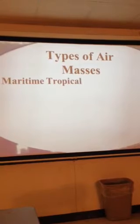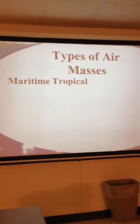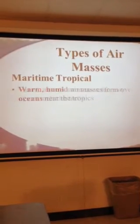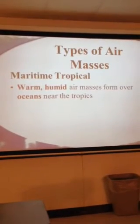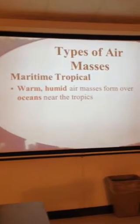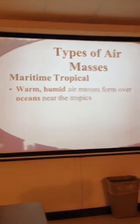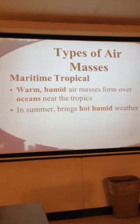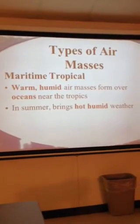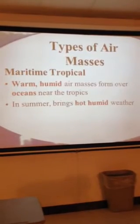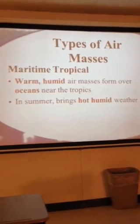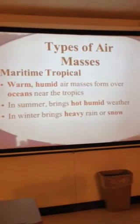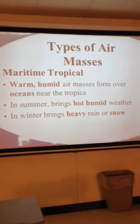The first type of air mass is maritime tropical. Maritime means it comes from the ocean, and tropical means it comes from a warm place near the equator. This is a warm humid air mass that forms over the oceans near the tropics — warm because it's tropical, and humid because it is maritime and picking up moisture from the ocean. In summer it brings hot humid weather to the United States, and in winter it can bring either heavy rain or snow depending on the temperature.